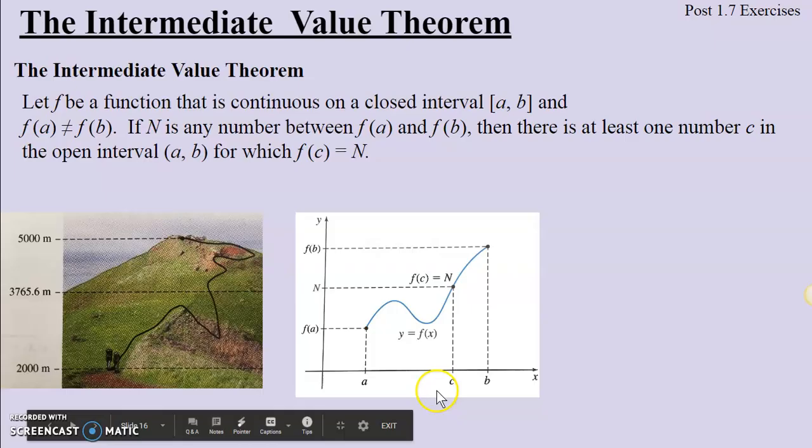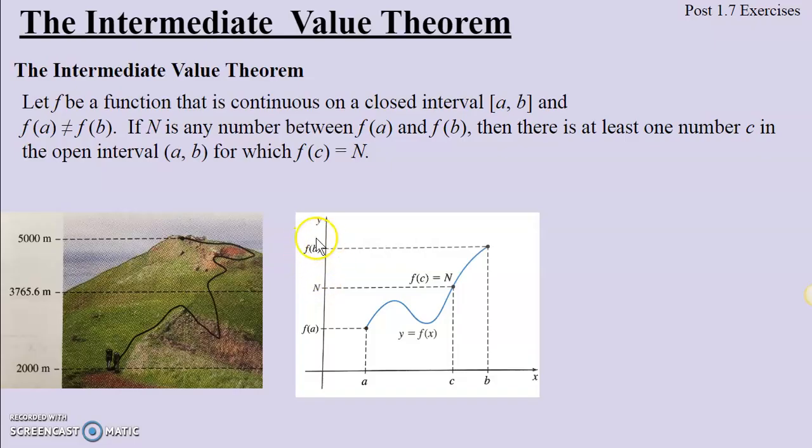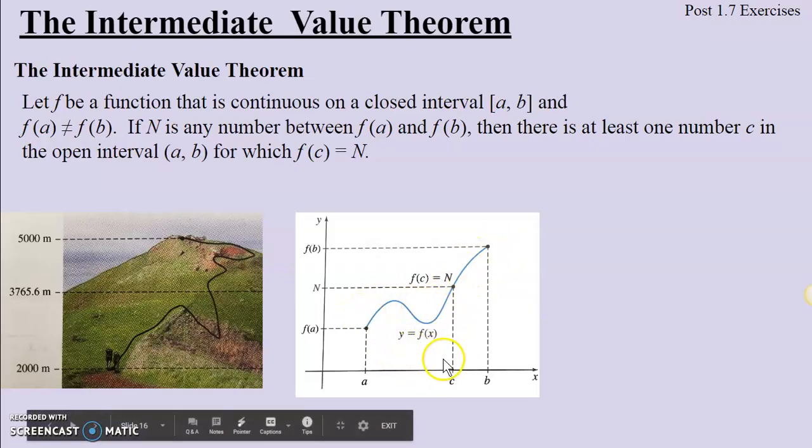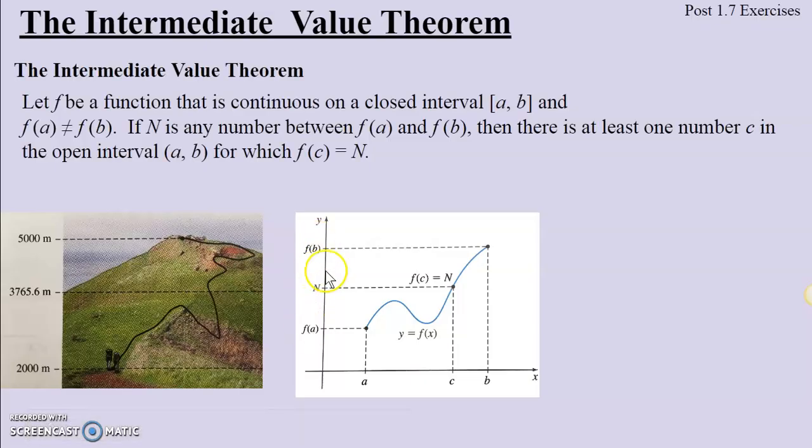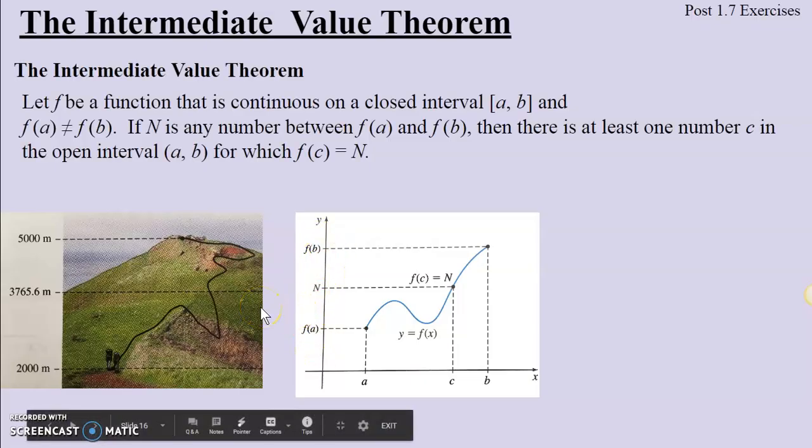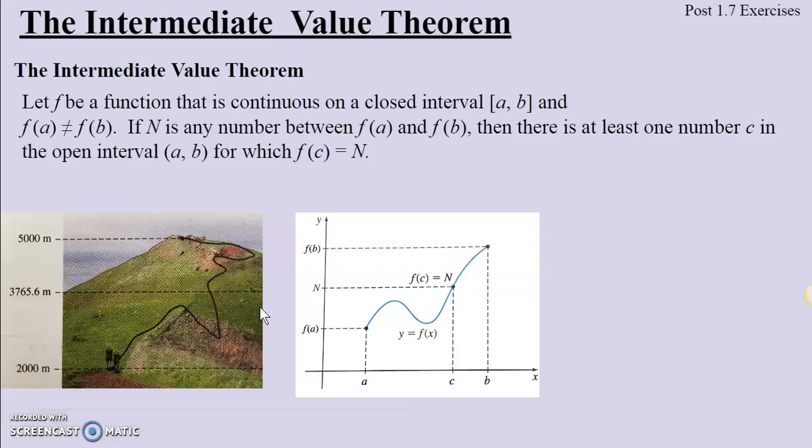If I have a and b on my x-axis, and the output of the function at a is not equal to the output of the function at b, then we can let N, capital N, be any output between f of a and f of b. Any output between. And what we're saying is that as long as this is a continuous function, there has to be at least one number c, at least one, between a and b, such that the output of c is equal to N, and N is between the output of a and b. So intermediate says it falls between two other values.